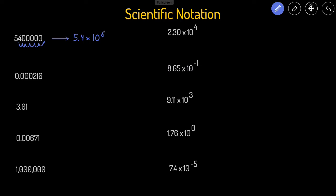Positive six because this number is a large number. Large numbers will have a positive exponent and small numbers have a negative exponent — or you could just think: numbers larger than one will have a positive exponent.